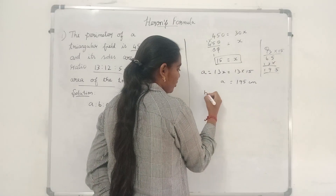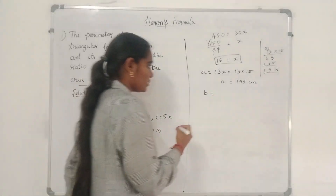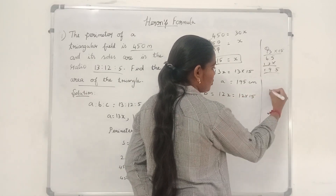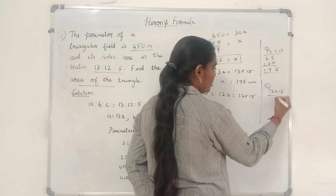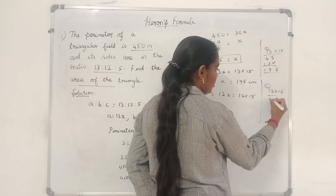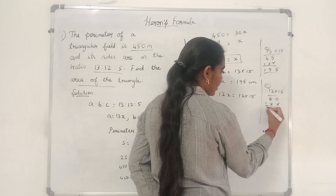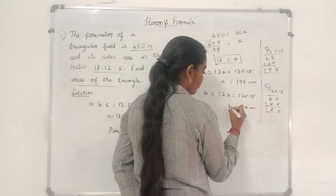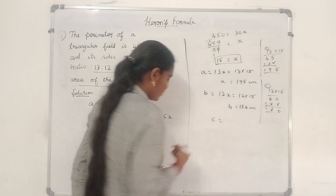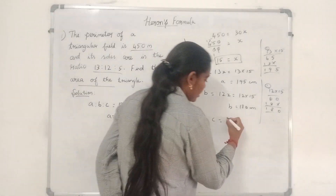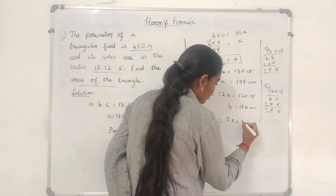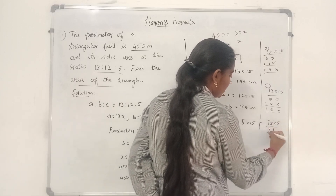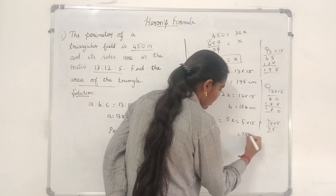Next, we have to find the value of b. b is 12x, so 12 into 15 equals 180. Value of b is 180. Next, value of c is 5x, so 5 into 15 equals 75. Value of c is 75.